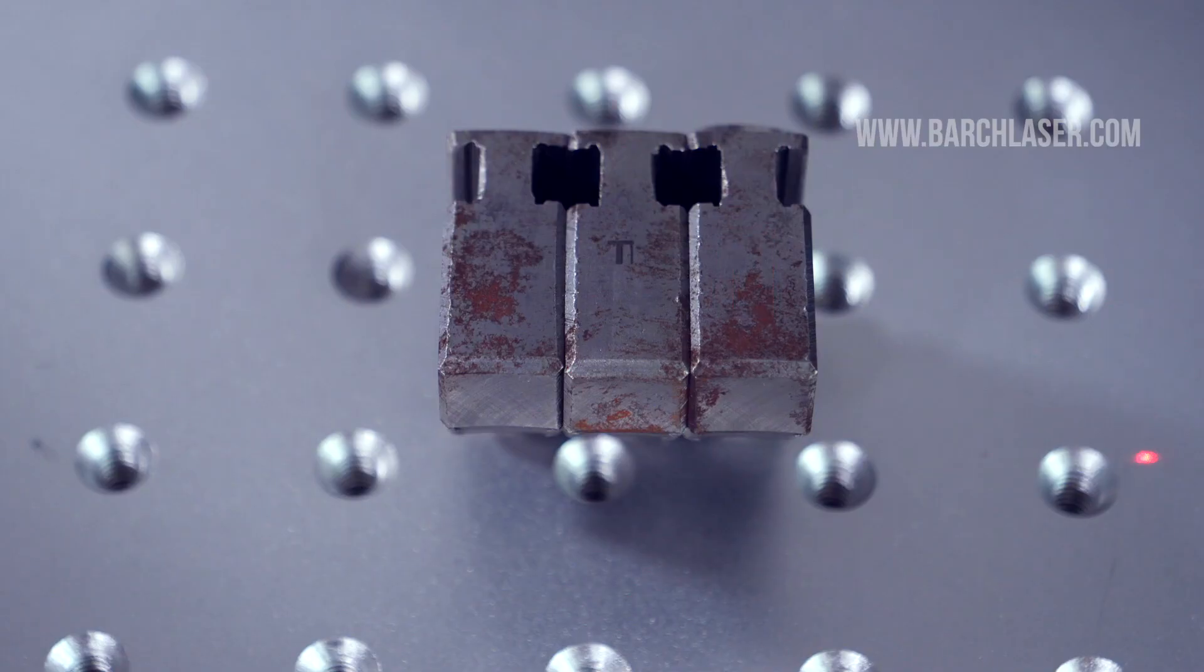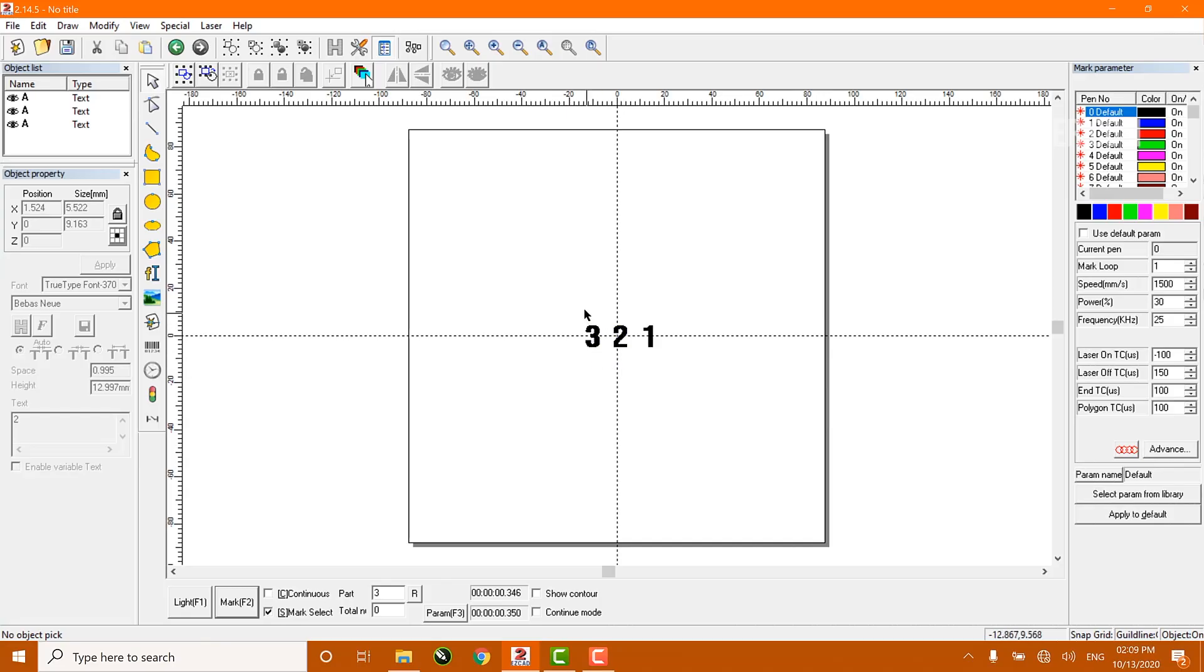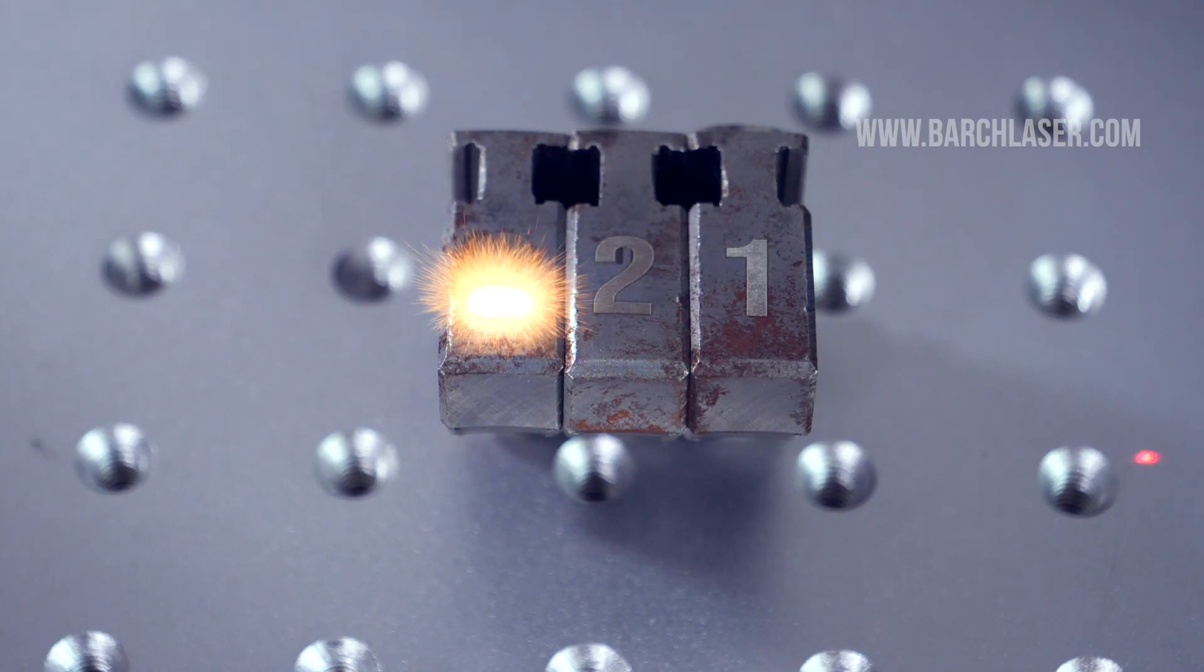I will only select number 1 and press F2, so I will only save design number 1. Now I will select design number 2 and 3 so that I can engrave these two designs simultaneously.